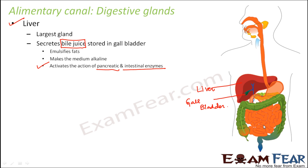The intestinal enzymes need a basic environment to function; they do not work in an acidic environment. Similarly, the enzymes released by the pancreas also require an alkaline medium. The pancreas is the other gland we are going to discuss. Just behind the stomach, you can see a green colored leaf-like structure — that is the pancreas. It also secretes pancreatic enzymes, along with bile juice from the liver, which help digest fats and convert them into less complex forms.